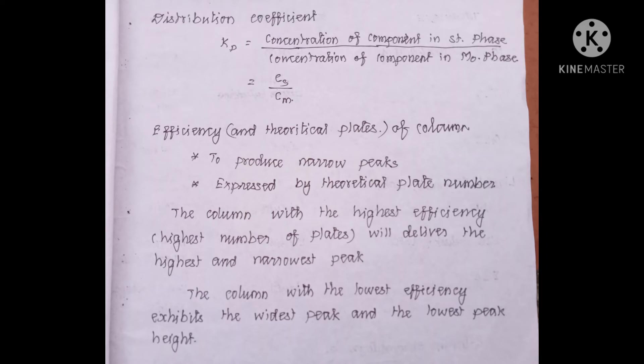The next important concept for examination is the efficiency of chromatographic columns. The narrower the peak, the more efficient the column. Efficiency is also expressed in terms of the number of theoretical plates — the greater the number of theoretical plates, the higher the efficiency. Conversely, on an inefficient column the peaks are broader and the number of theoretical plates is small.